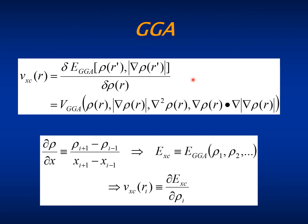Another issue worth mentioning is how SIESTA calculates the exchange and correlation potential. In DFT, the exchange and correlation potential is the functional derivative of the exchange-correlation energy, which in the GGA approximation depends on the local charge and the gradient of the local charge. When one performs this functional derivative,